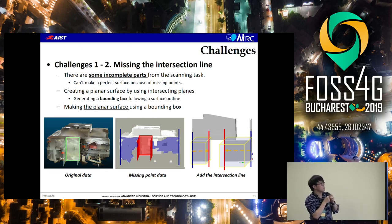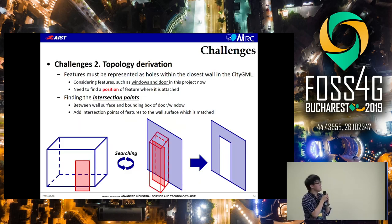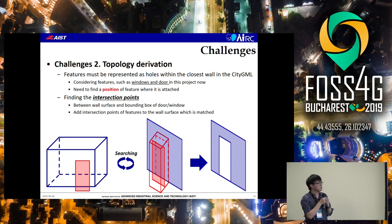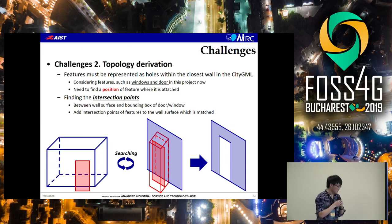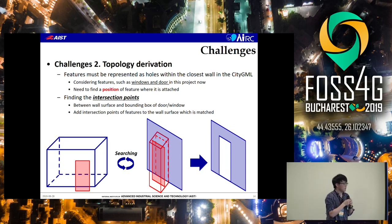We address this by creating a planar surface using intersecting planes and generating a bounding box following the surface outline, then making the final surface using the bounding box. The last challenge is topological derivation. Openings such as windows and doors must be represented as holes within the enclosing wall in CityGML. We need to find the position of the opening where it is attached to the wall. We find the intersection point between the wall surface and the bounding box of the door or window, then add that intersection point or feature to the matched wall surface.